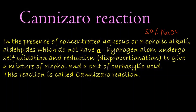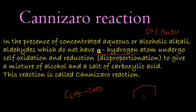The aldehyde used in this reaction should not have alpha hydrogen. For example, benzaldehyde C6H5CHO — the carbon adjacent to the CHO group is the alpha carbon. In benzaldehyde, there is no hydrogen attached to this alpha carbon, so it qualifies. Formaldehyde also undergoes the Cannizzaro reaction because it doesn't have alpha hydrogen.